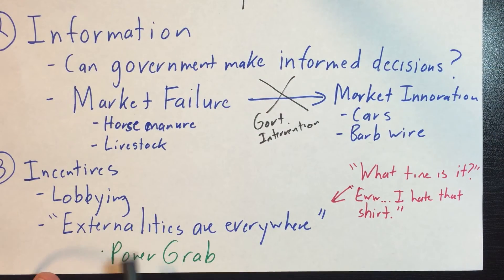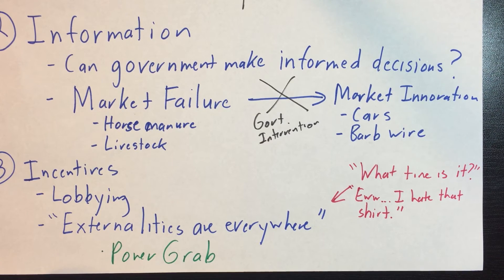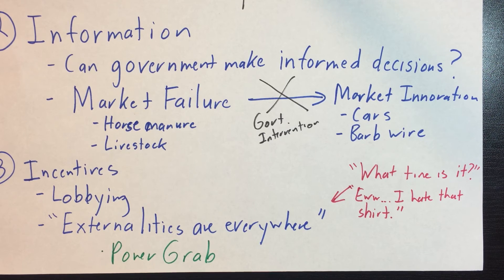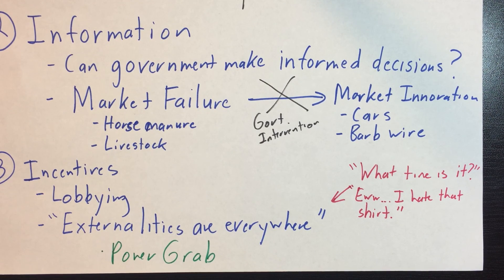Last, we have to consider government incentives. We hear a lot about lobbying — what if the government uses its powers to fix externalities in ways that favor certain companies over others? We have to be careful about giving government more power because its incentives may not be aligned with what the public wants.